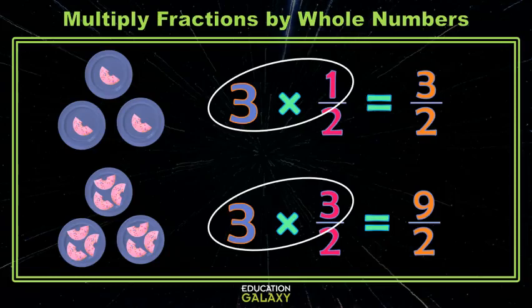And some of you are wondering if these improper fractions, three halves and nine halves, can be written as mixed numbers. And they can. In our first example, our three one halves, if we try and put those donuts back together, you'll see we do end up with one and one half donuts.